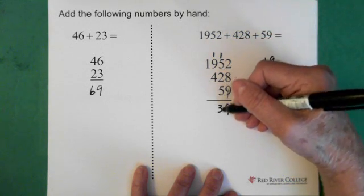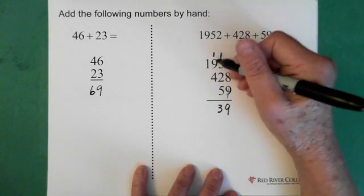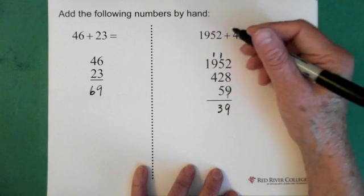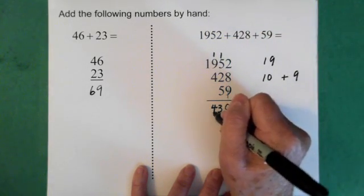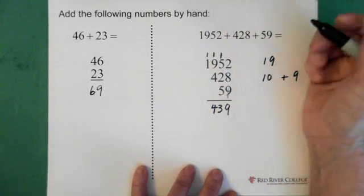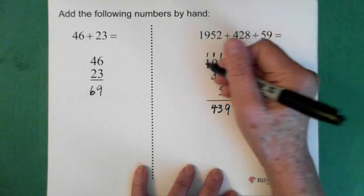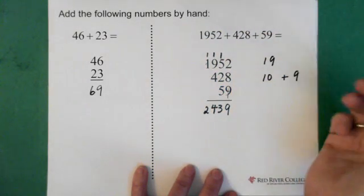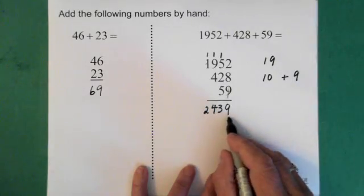We add this up, we end up with 13. There's a 3 down here, and the 1 goes into the hundreds position. We add this line, and we end up with 14. So the 4 goes there, and the 1 goes up above the thousands position, and then we add these up, and we end up with 2, 4, 3, 9. So 2,439.